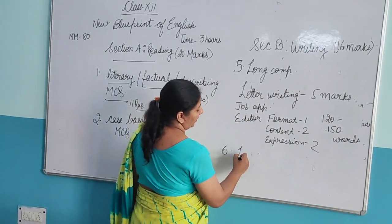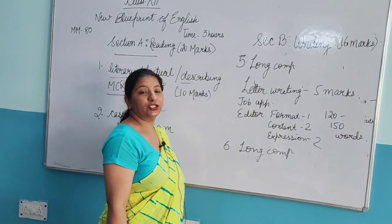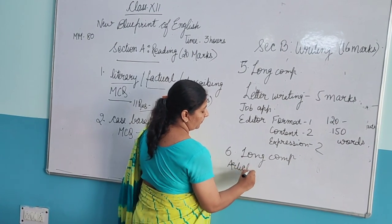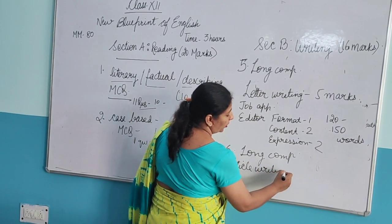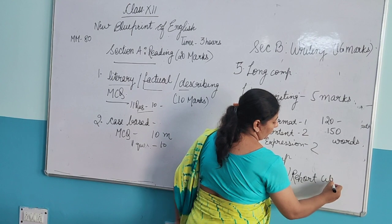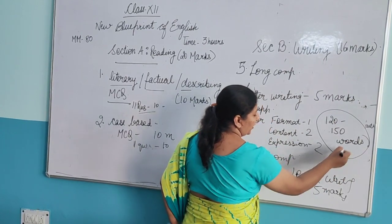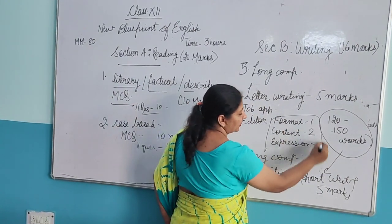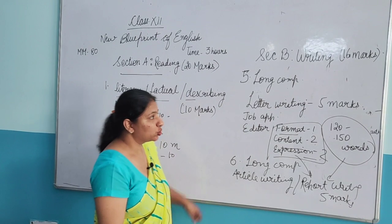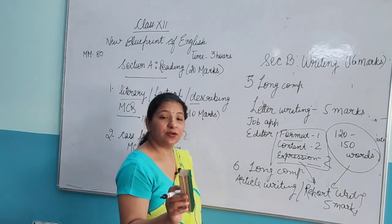The sixth question is again long composition. Since speech and debate have been deleted, what remains is article writing or report writing. This again is of 5 marks, word limit 120 to 150 words, and the same distribution: Format 1 mark, Content 2 marks, Expressions 2 marks. This completes the 16 marks of Section B — Advanced Writing Skills.